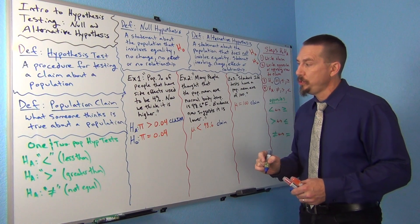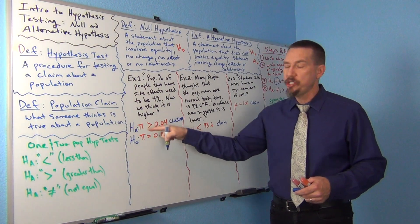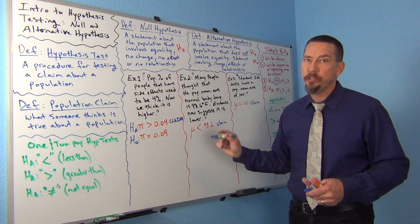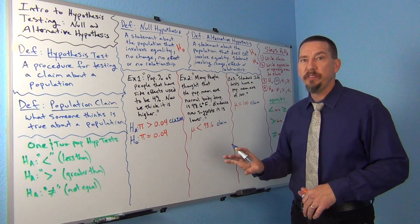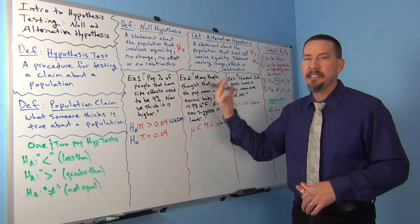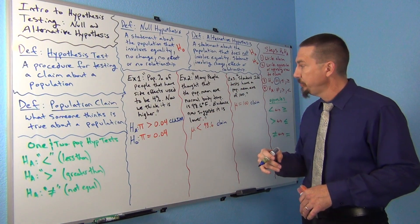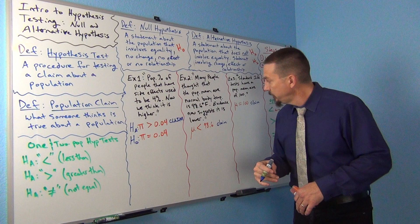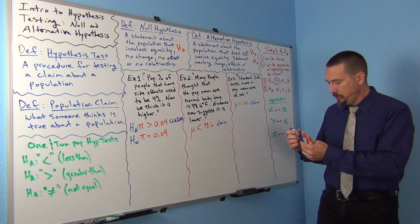I always tell my students: don't write H0 and HA on your paper first. Write your two opposing views and then decide what's the null and alternative. Alright, let's look at the next one here.